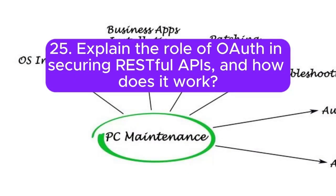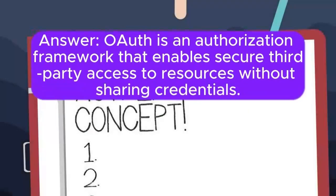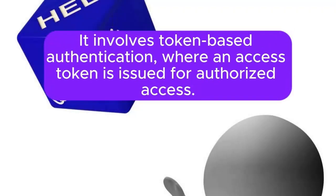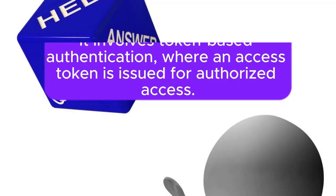Question 25: Explain the role of OAuth in securing RESTful APIs and how does it work? OAuth is an authorization framework that enables secure third-party access to resources without sharing credentials. It involves token-based authentication, where an access token is issued for authorized access.